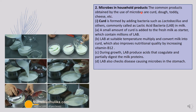Microbes in household products: they are used for making curd, dough, toddy, cheese, and more. Curd is made by adding Lactobacillus to lukewarm milk. A small amount of Lactobacillus is dissolved into the lukewarm milk, mixed carefully, allowed to settle, and after some time the milk is converted into curd. Curd is formed by adding lactic acid bacteria such as Lactobacillus to milk.